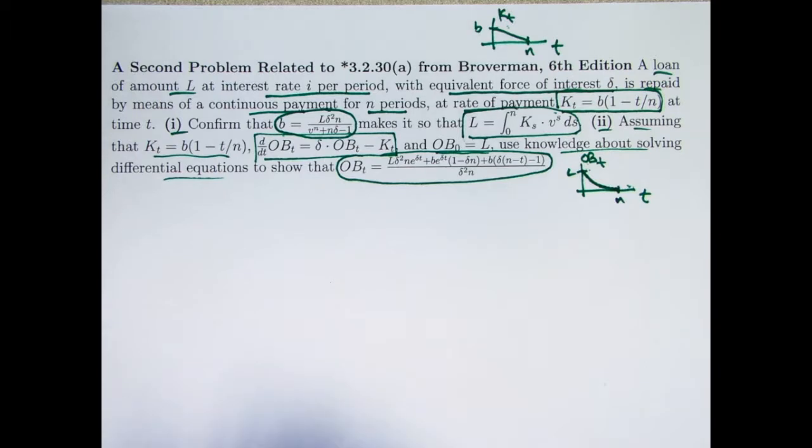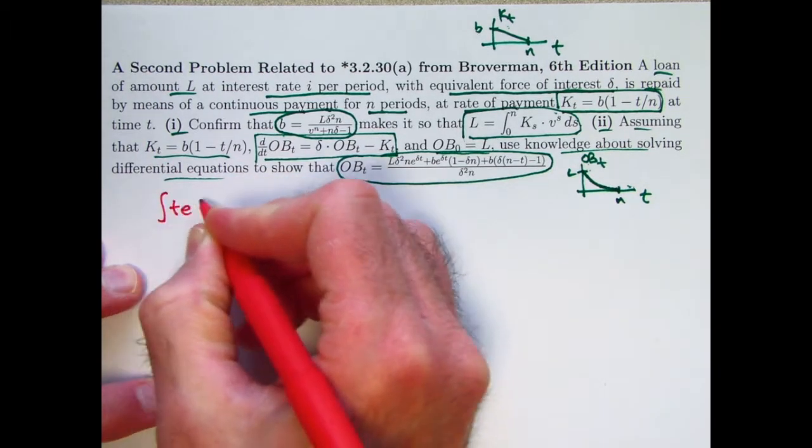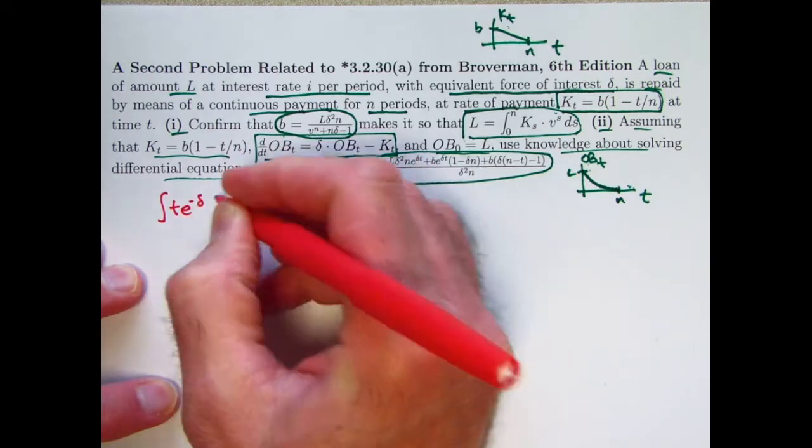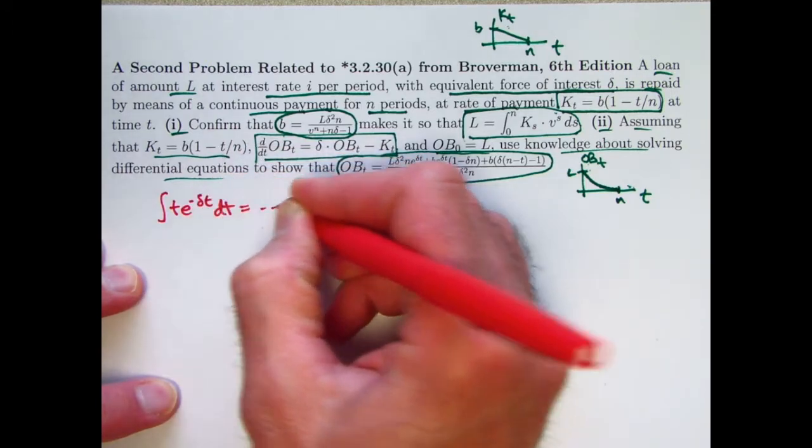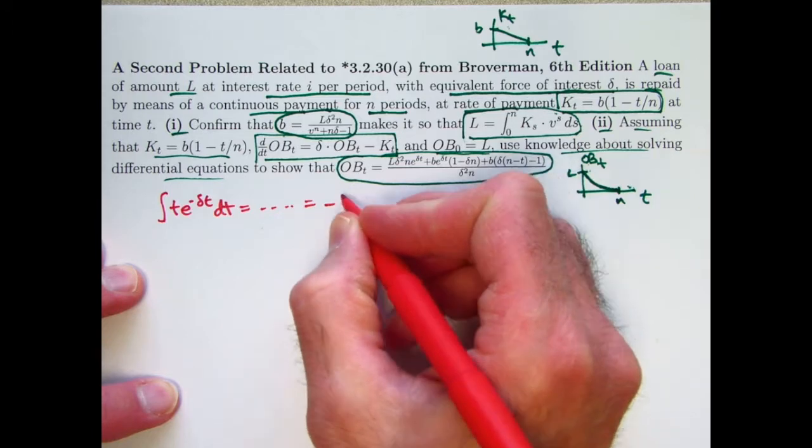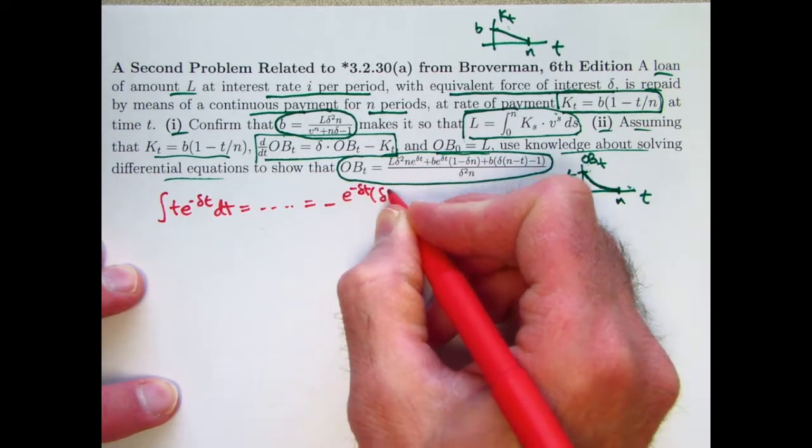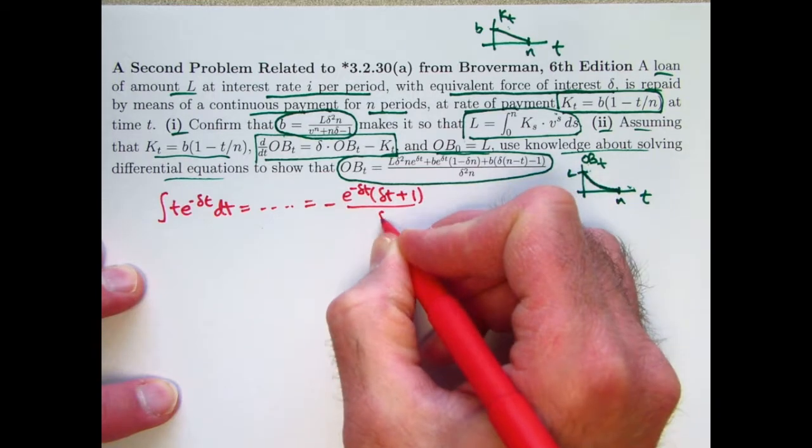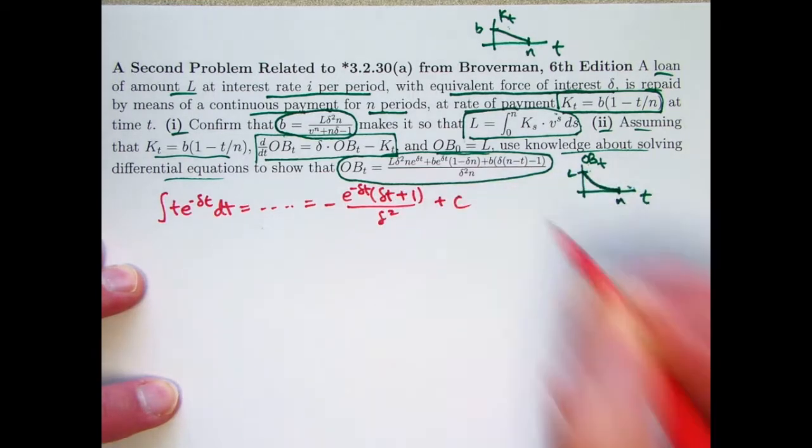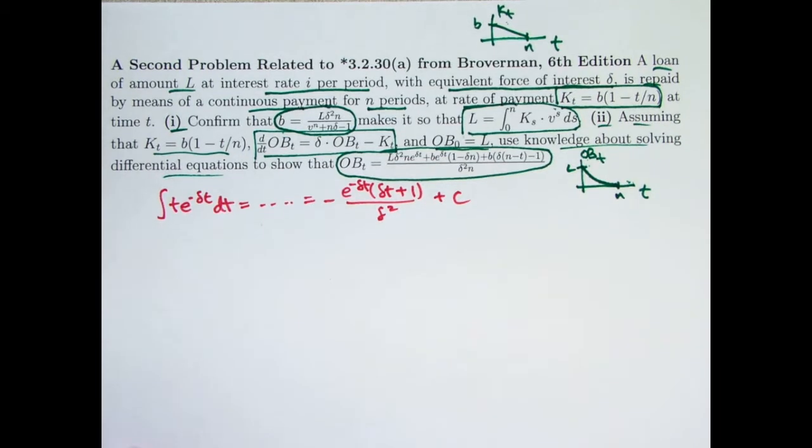As in the last video, we need to recall a formula for a certain kind of integral. It's the integral of t times e to the delta t. I derived that in the last video with integration by parts. Here, let me just write down the answer, although I'm going to write it in maybe a simpler form as negative e to the negative delta t times in parentheses delta times t plus 1 over delta squared plus c. Though when we do our definite integral, we won't need plus c because the fundamental theorem of calculus allows us to cancel that anyway.